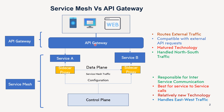Let us understand what they are doing at their own layers and what work they are basically performing. The API Gateway is routing any traffic coming from external partners and external clients. Suppose you have a browser — it is handling that traffic. Whatever API requests it is going to handle, suppose you have 20 APIs exposed to the client, those are being handled by the API Gateway.